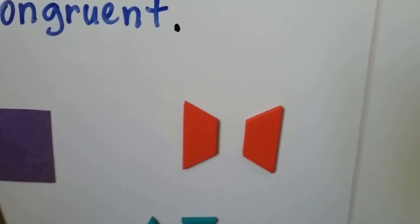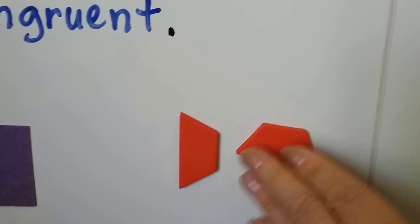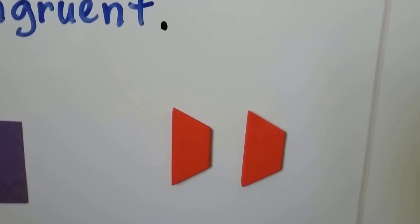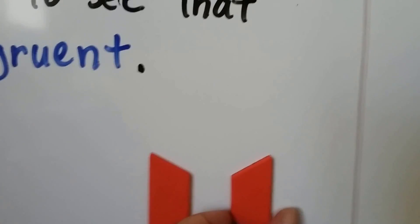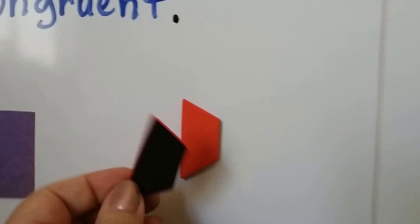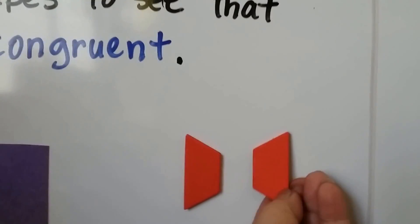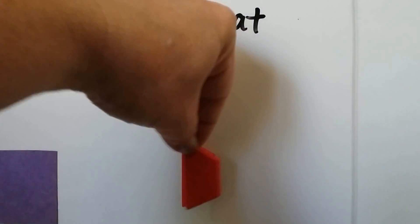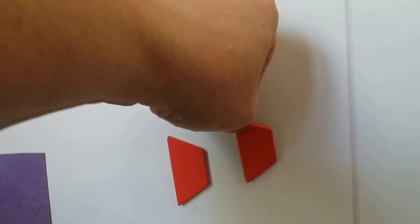Look at these two trapezoids. Are they congruent? If we turn this one, are they the same size and shape? Yeah, they are. And even if it was still like this, we would be able to take it and lay it on top of this one and see that it's the same size and shape. So they're congruent. Even if this one's facing another direction, we can lay it on top of this one and see that it's the same size and shape, whether it was flipped or not.